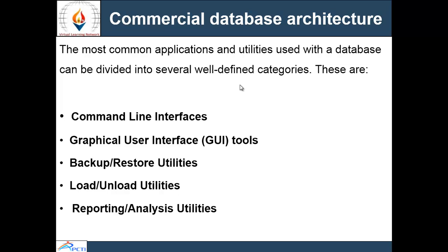Next is commercial database architecture. We have discussed logical architecture — where the database is divided into internal, external, and conceptual categories — and physical architecture. In commercial database architecture, common application utilities include command-line interfaces, GUI tools, backup and restore utilities, load and unload utilities, and reporting or analysis utilities to analyze the working of the database efficiently.